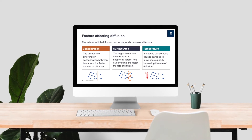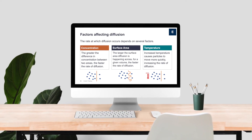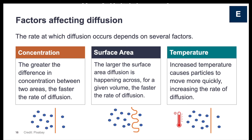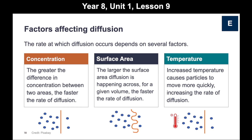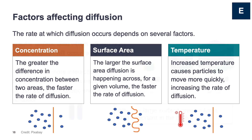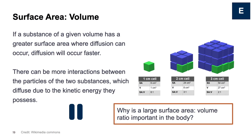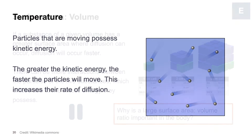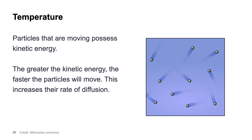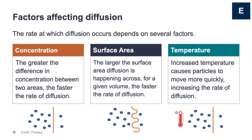After I had taught the definition of diffusion, I then introduced the factors that can affect the rate of diffusion — that was my next little chunk in the sequence. I explained the effect of concentration, surface area, and temperature. Because the theory behind surface area and temperature was a little more complex, I spent time unpacking each of these individually as well as comparing all three factors.